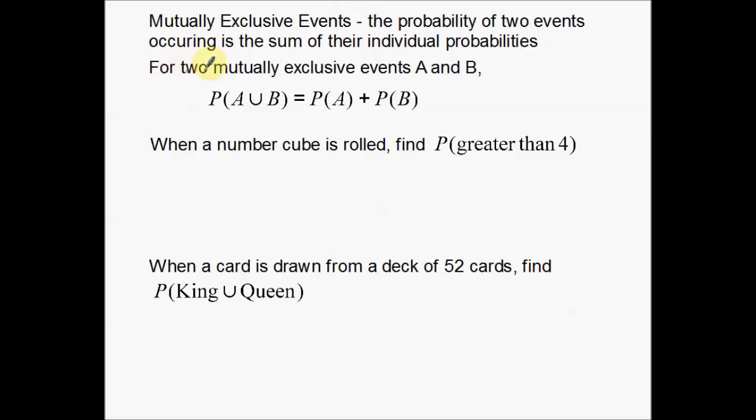So mutually exclusive events is the probability of two events occurring is the sum of their individual probabilities. For two mutually exclusive events A and B, the probability of one or the other happening, this little symbol right here for your guys' purposes just really means or. Event A or event B happening is equal to their individual probabilities just added together.